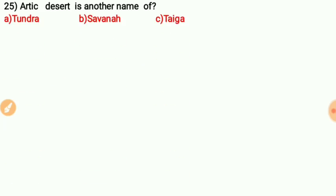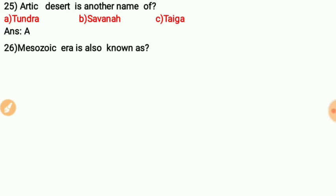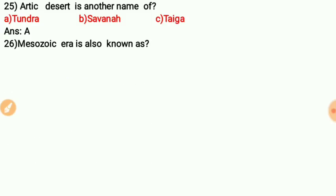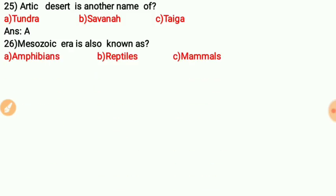Question twenty-four: What is another name for the Arctic desert? The answer is tundra. Tundra has very low temperatures and is also known as the Arctic desert. Question twenty-five: The Mesozoic Era is also known as the era of reptiles.